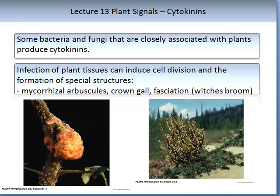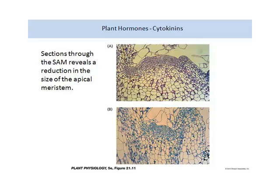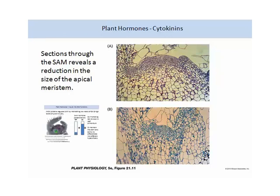Cytokinin can promote shoot growth by increasing cell division in the shoot apical meristem. An experiment on tobacco plants lacking cytokinin shows strongly inhibited shoot growth and little or no flower production; the wild-type plant is on the left. Images on the slide reveal sections of shoot apical meristems, showing a reduction in the size of the apical meristem when cytokinin are absent. For further details, please return to the slide on plant hormones inputs into shoot apical meristems.